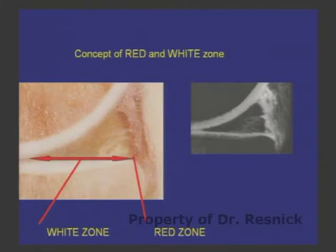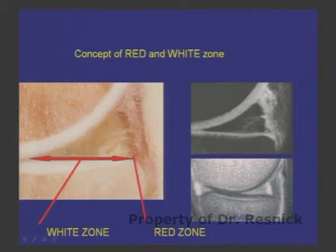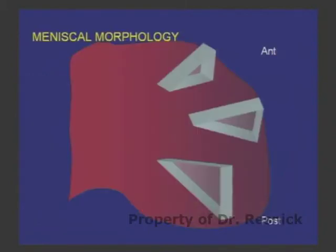At our institution, several radiologists are working with ultra-short TE sequences. Using these sequences, you can see that the red zone is of higher signal than the white zone. This may represent part of the future of MR imaging of the menisci, but right now with standard sequences, the signal intensity is the same between zones.